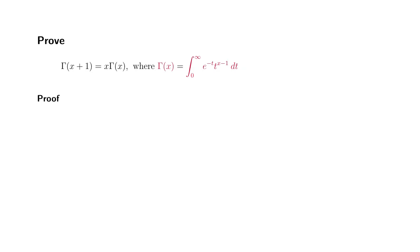All right, let's try to prove the reduction formula for gamma function. Gamma of x plus 1 is equal to x times gamma of x. The definition of a gamma function is stated here.